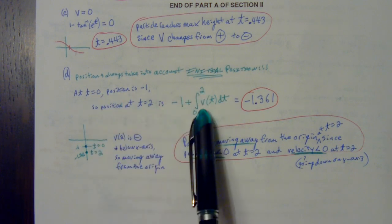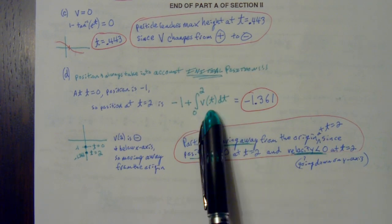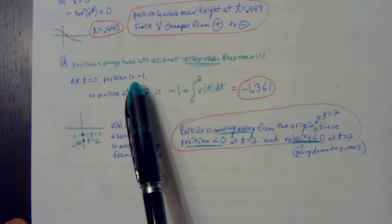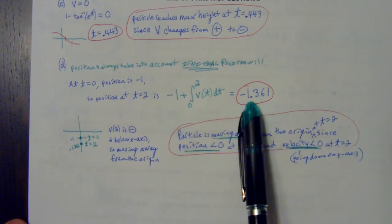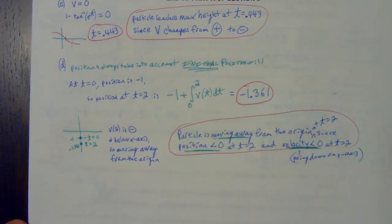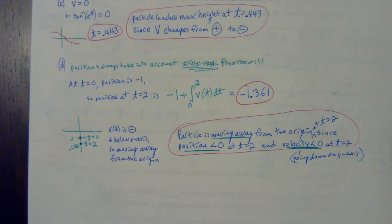I always set it up at the beginning right away. The initial position was negative one. That's where I was at at t equals zero. Then you pick it up where you left off. From zero to two, when I integrate the velocity, that tells me how far I went in between those two seconds. If you do the Math 9 between zero and two with this velocity function and then add in that initial position of negative one, it gets you this negative 1.361 number. That's the first part of part D. We'll see that more in the future. We want to make sure we always take into account that initial position.